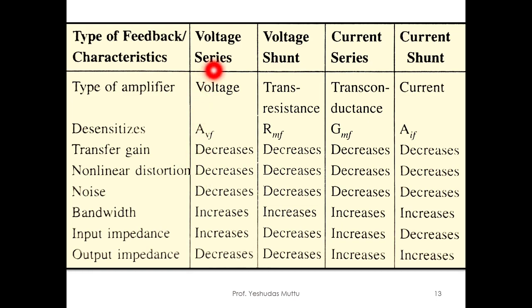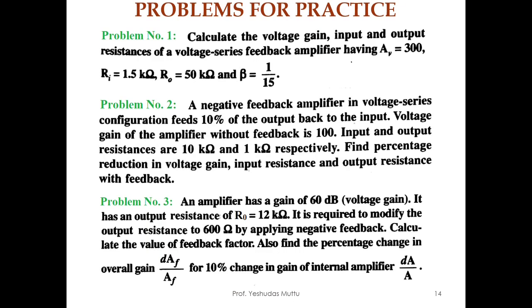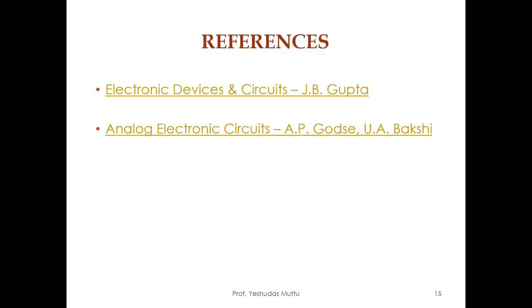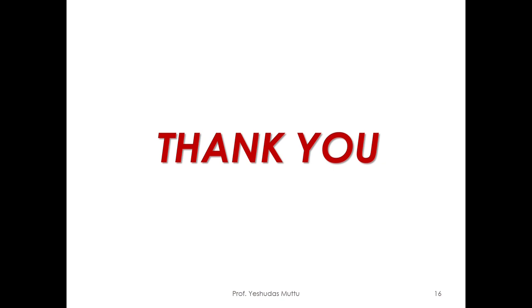A summary table of all four configurations — voltage series, voltage shunt, current series, current shunt — and all their parameters is provided for review. Practice problems are also given. I refer to the books by J.B. Gupta and A.P. Godse. Thank you.